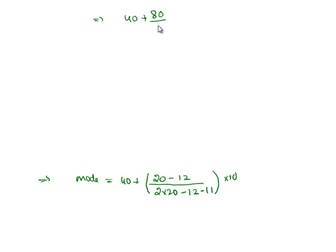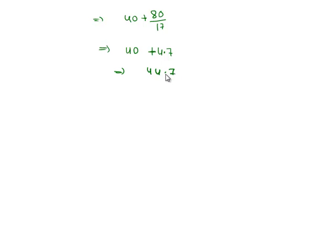As we solve it, we get 40 plus 80 by 17, that is equal to 40 plus 4.7, it is 44.7. Therefore, the mode of the data is 44.7 cars.